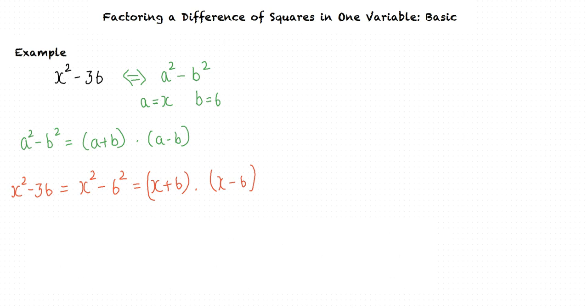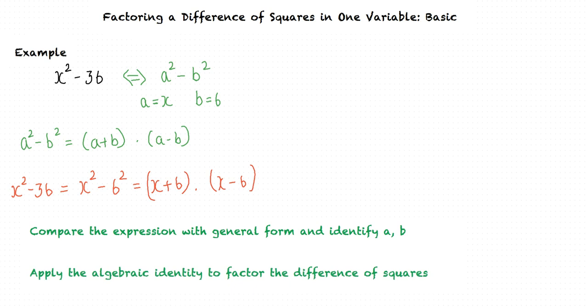I think I understand the concept. In order to factor the difference of squares, we first compare the given expression with the general form and identify a and b. Finally, we apply the algebraic identity to factor the difference of squares.